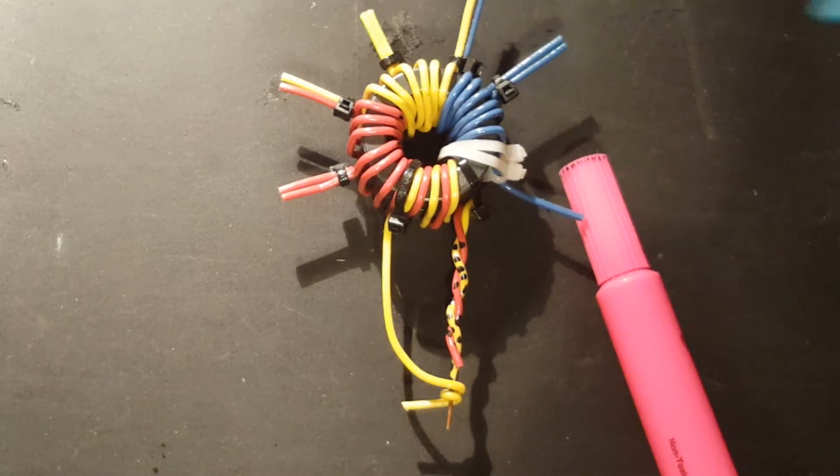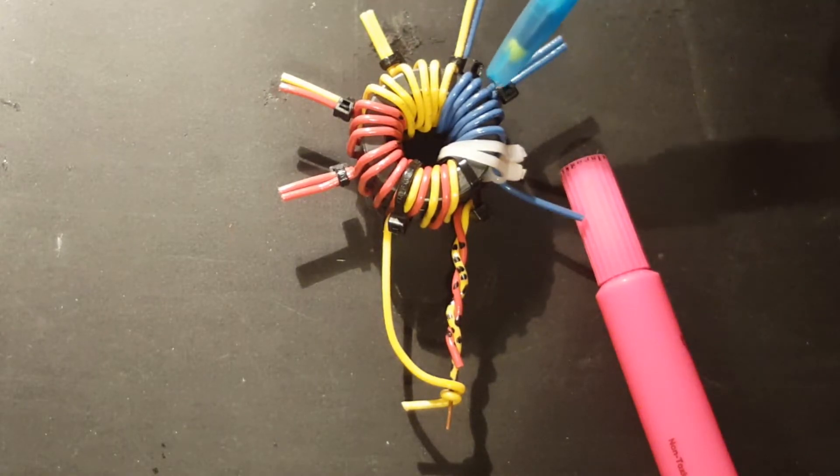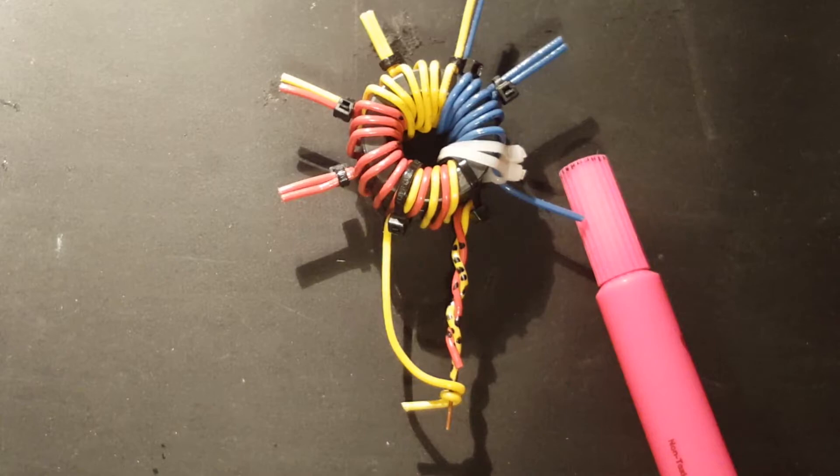When I'm all done, like I am now, now I'm ready to, what I'll do is one at a time, I'll cut the zip tie off. I'll leave about a quarter inch of insulation there, maybe an eighth of an inch. Then I take my wire stripper, strip it off, twist them together with a pair of pliers, and then solder it one at a time.